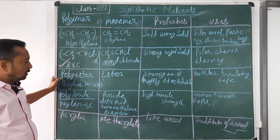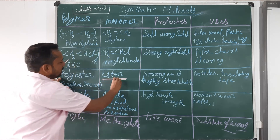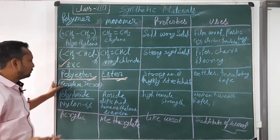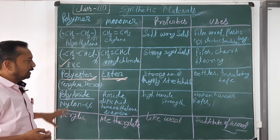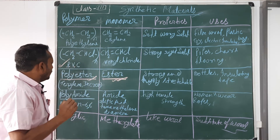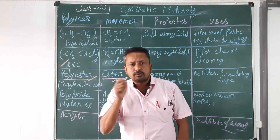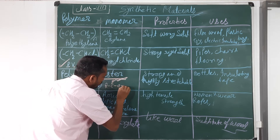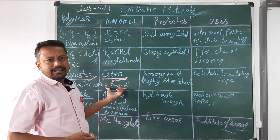The next important polymer is polyester, whose monomer is ester. Polyester is divided into two classes: Terylene and Dacron. I have not used a specific chemical formula here because ester is not a single compound — it is a family of organic compounds with the general formula R-COO-R', where R and R' are either the same or different alkyl groups.